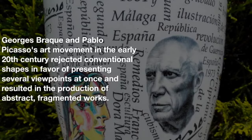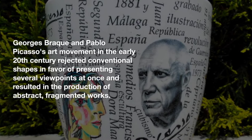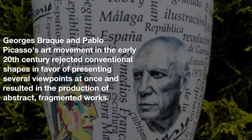Cubism emerged in the early 20th century and rejected conventional shapes in favor of presenting several viewpoints at once, resulting in the production of abstract, fragmented works. Surrealism was a 1920s and 1930s art movement distinguished by irrational and hallucinatory works that frequently questioned uniformity and reason.